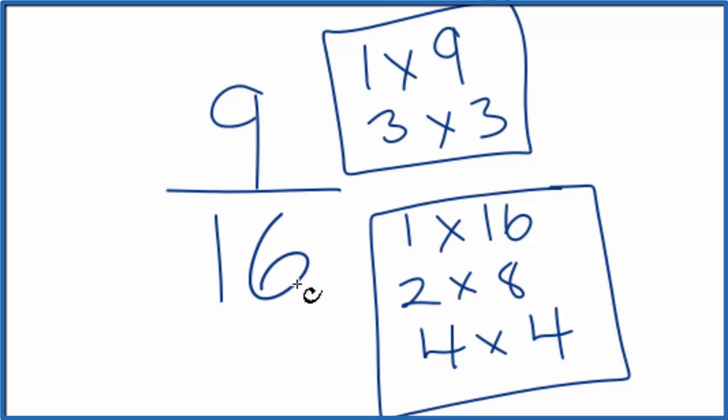9/16, this is the simplified form for this fraction. So in answer to our question, when you try to simplify the fraction 9/16, even though it looks like it might simplify, it doesn't. This is the simplified form, or the form where we have the lowest common multiples of 9 over 16.